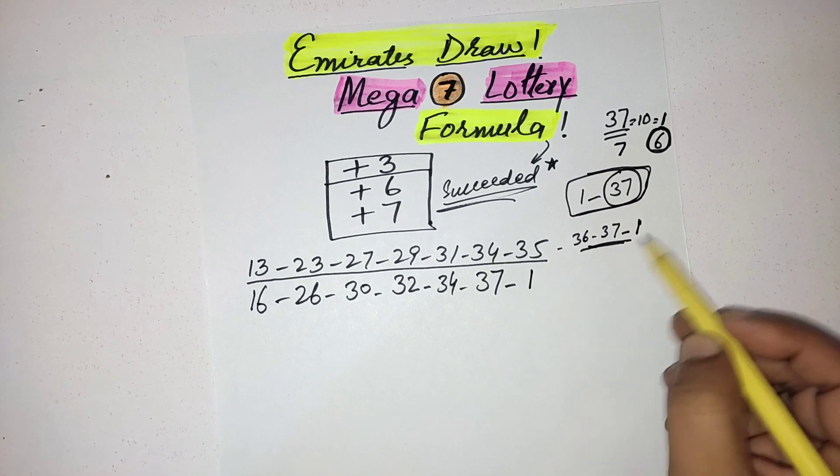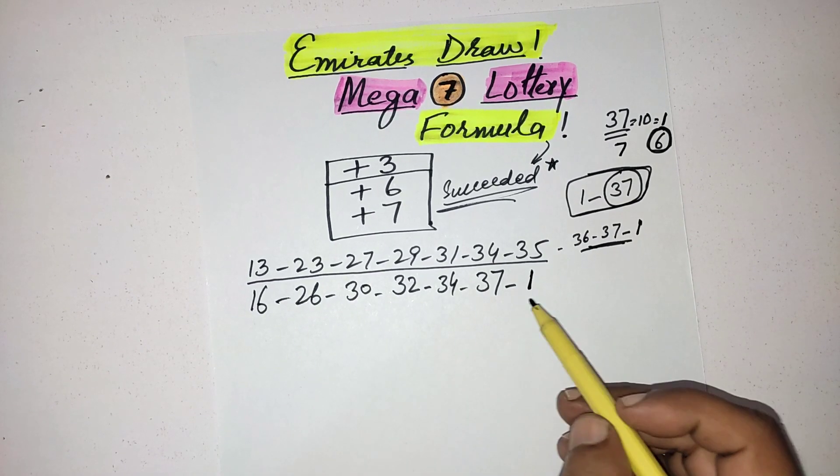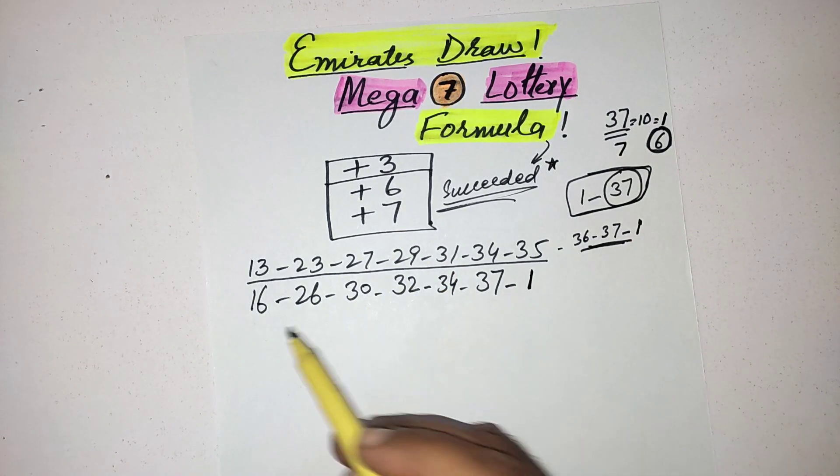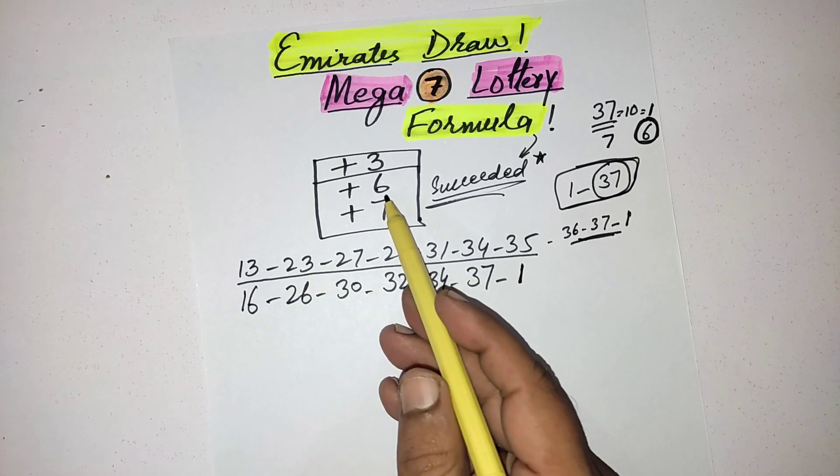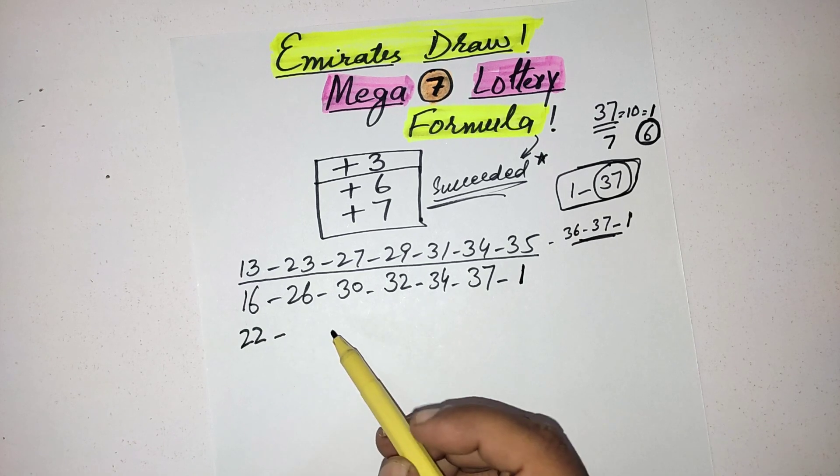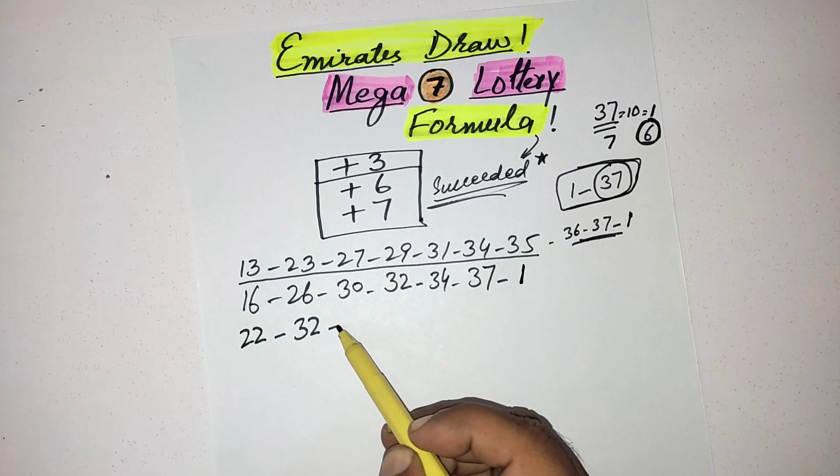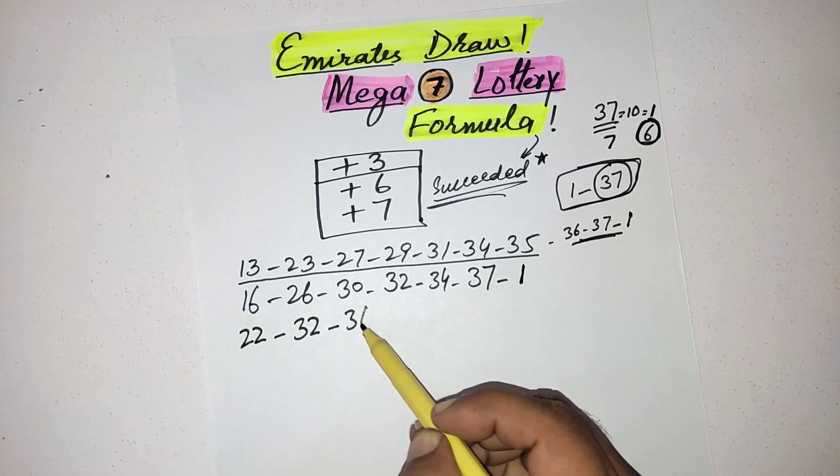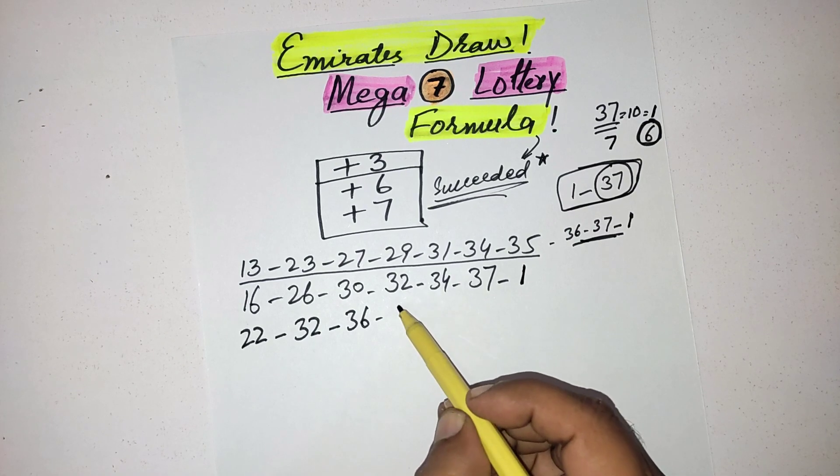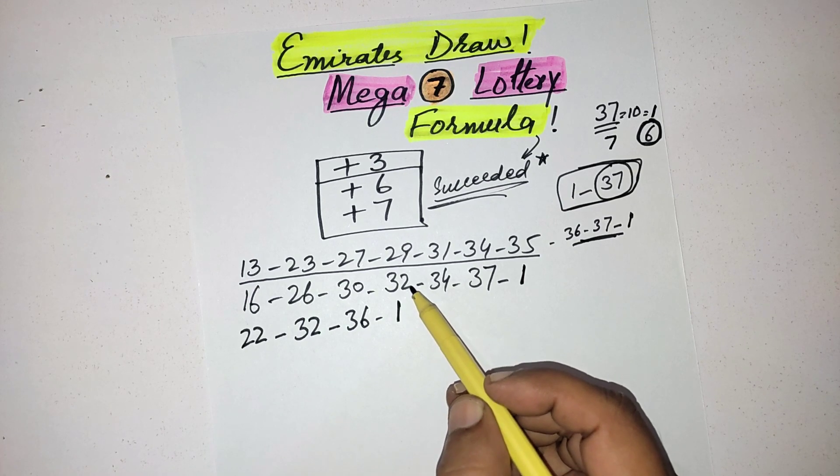Then again you will add the 6 number in these numbers. Number 1, 16 plus 6 is equal to 22. 26 plus 6 answer is 32, 30 plus 6 is 36. Again 32 plus 6 is 1, because 32 plus 5 is 37, then again you will start from 1.